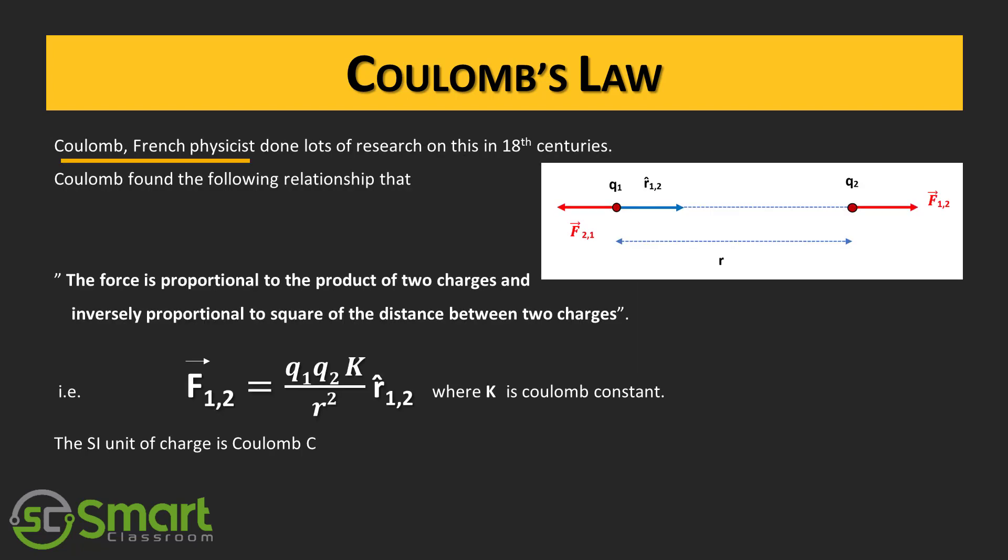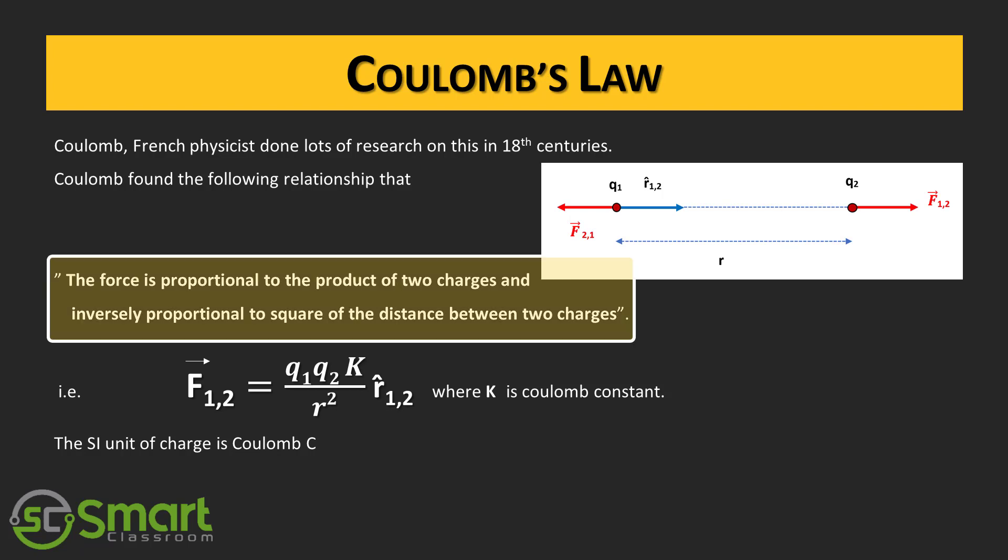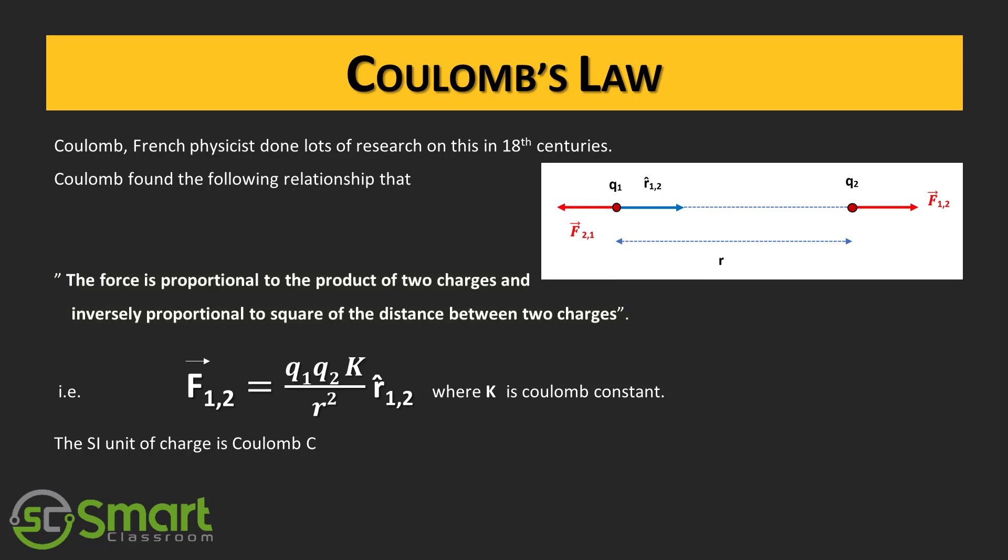Coulomb, the French physicist, did a lot of research on this in the 18th century. Coulomb found out the following relationship: that the force is proportional to the product of two charges and inversely proportional to the square of the distance between two charges. The relation f12 equals q1 q2 k divided by r square into unit vector r12, where k is the Coulomb constant.